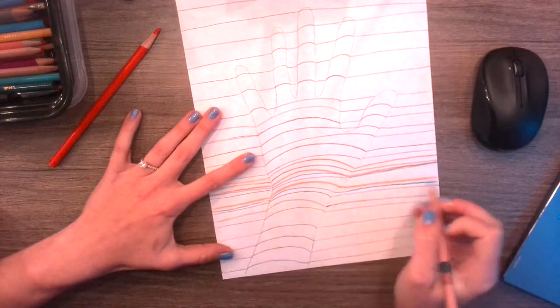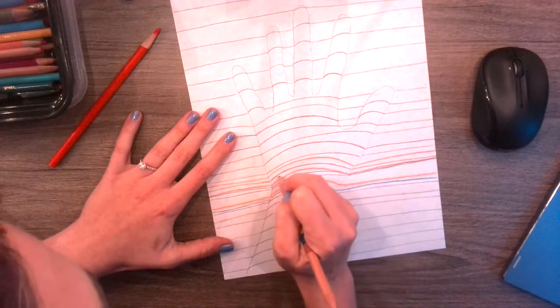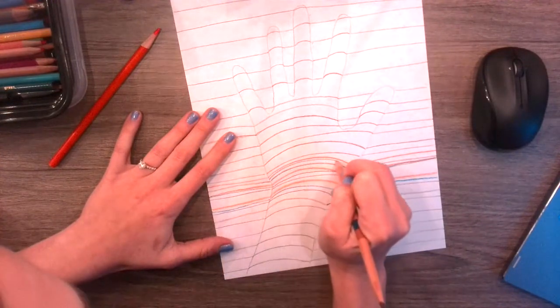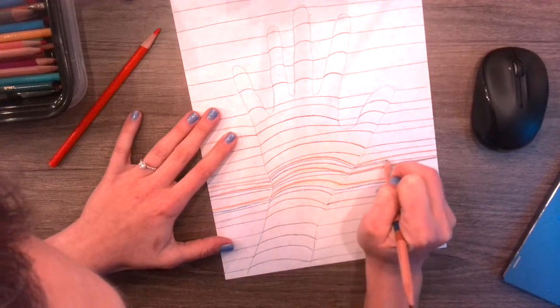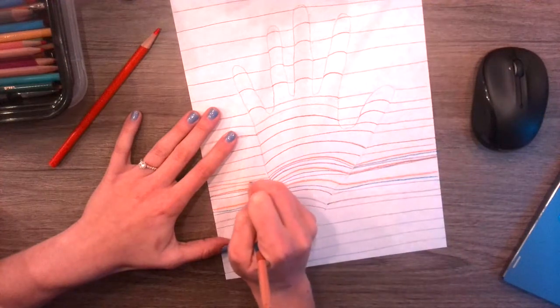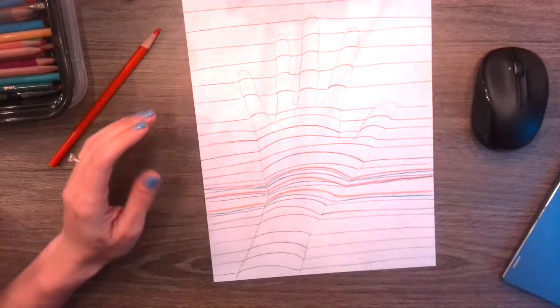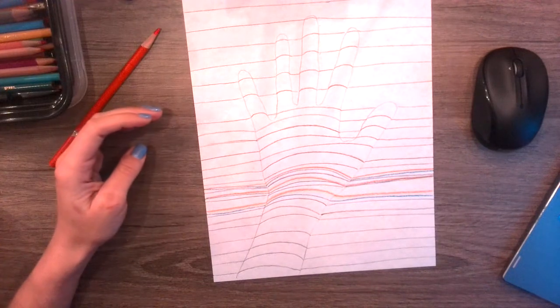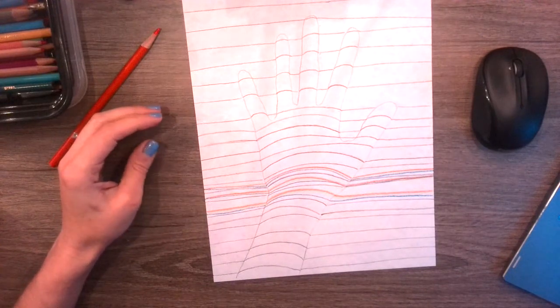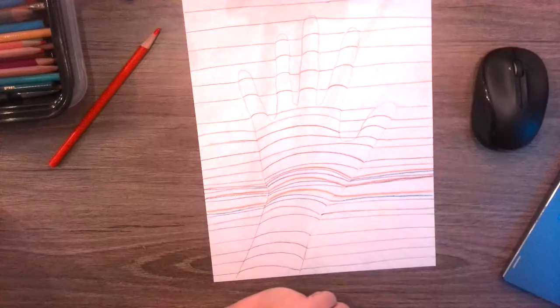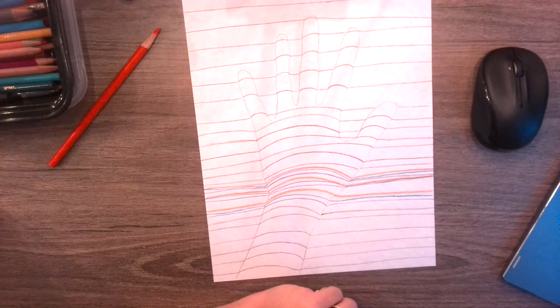So now that we know the pattern to do this, it makes it a little bit easier. Curved line in the middle, straight lines on the side. And then you'll just keep going until you are finished. So I will finish this and then show you the finished product. Hold tight.